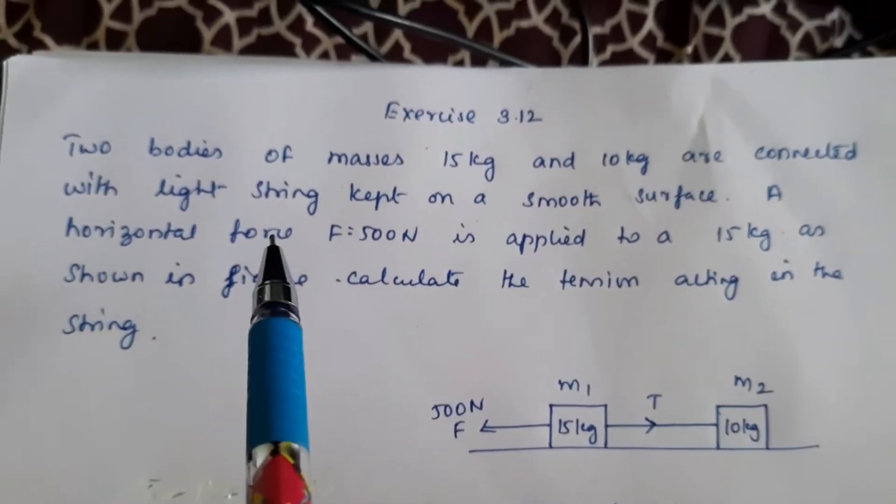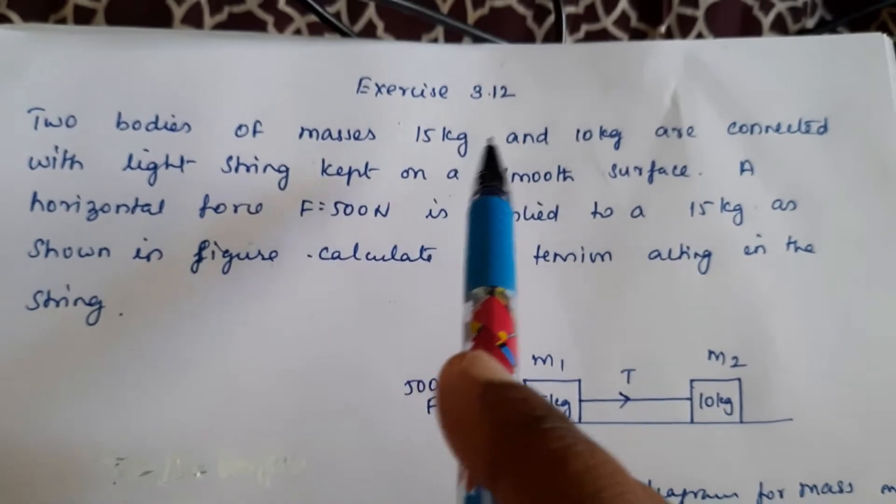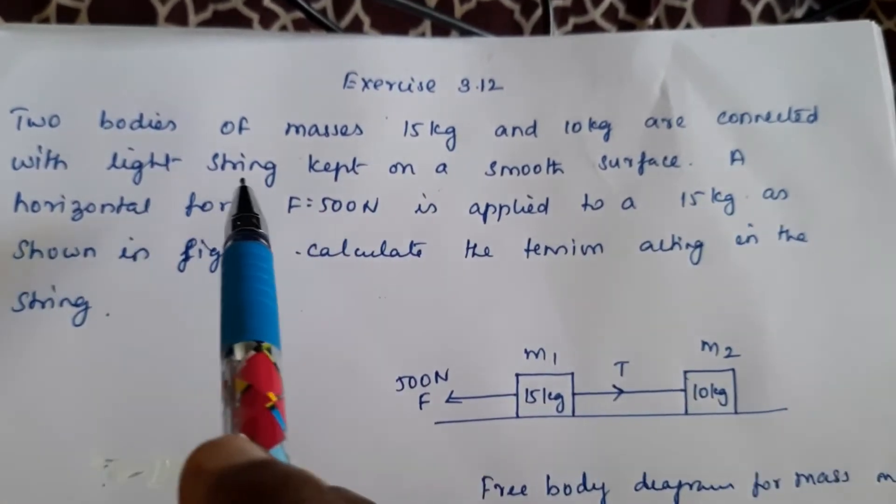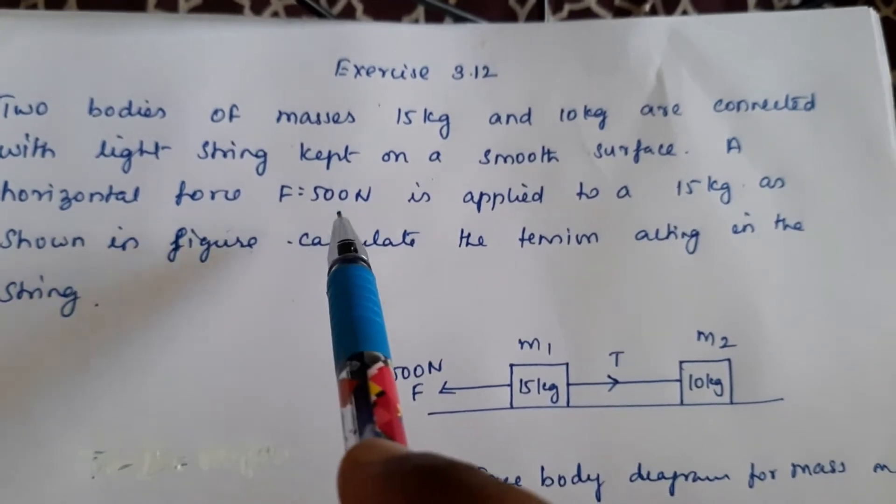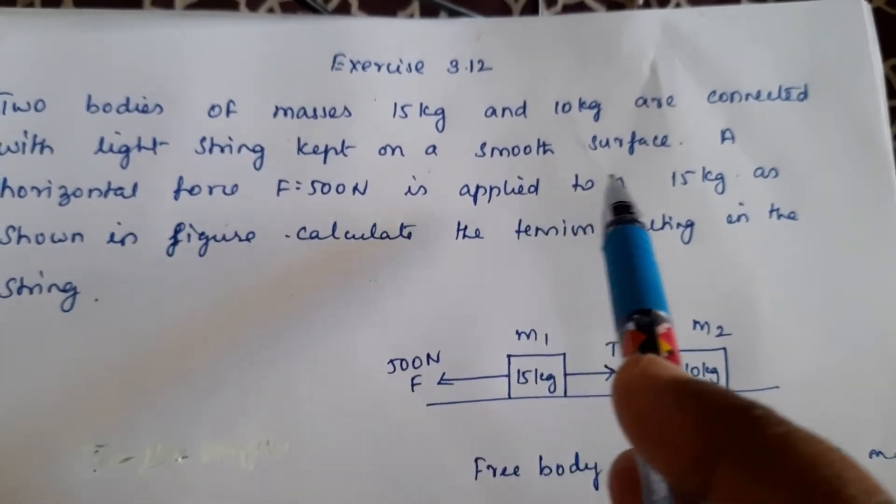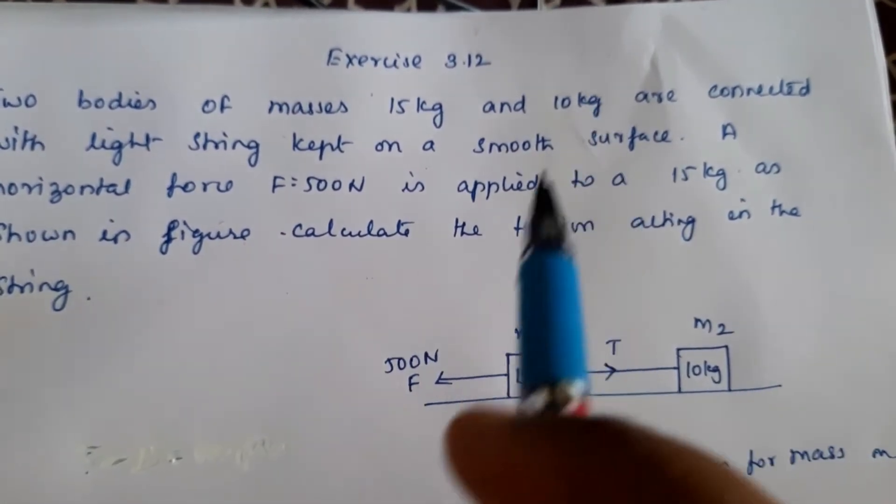Exercise 3.12: Two bodies of masses 15 kg and 10 kg are connected with a light string kept on a smooth surface. A horizontal force F equal to 500 newton is applied to the 15 kg mass as shown in the figure.